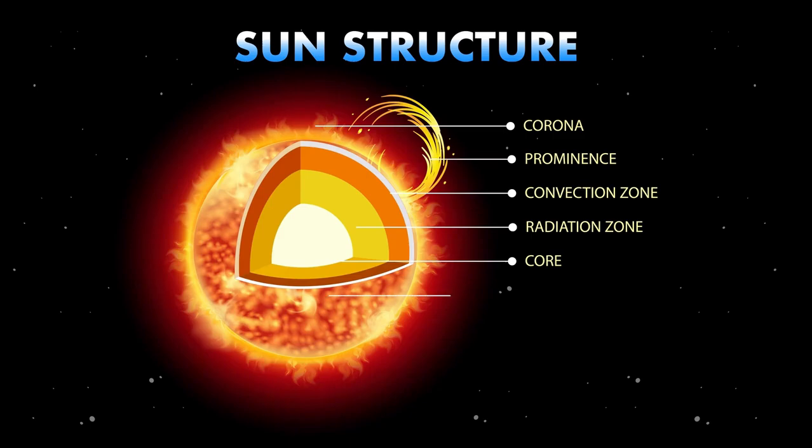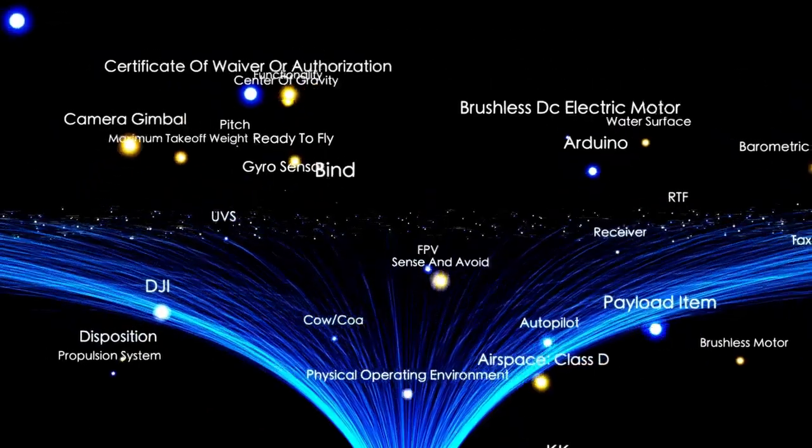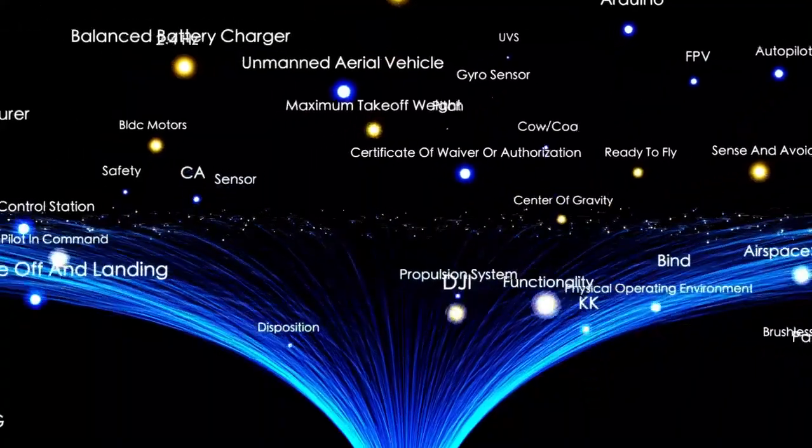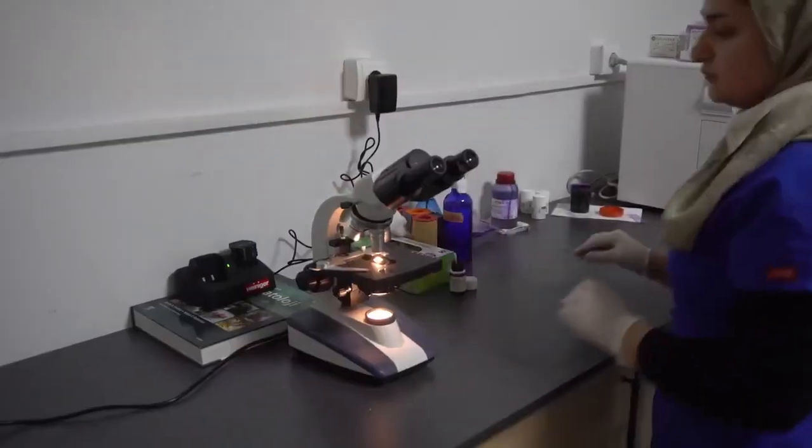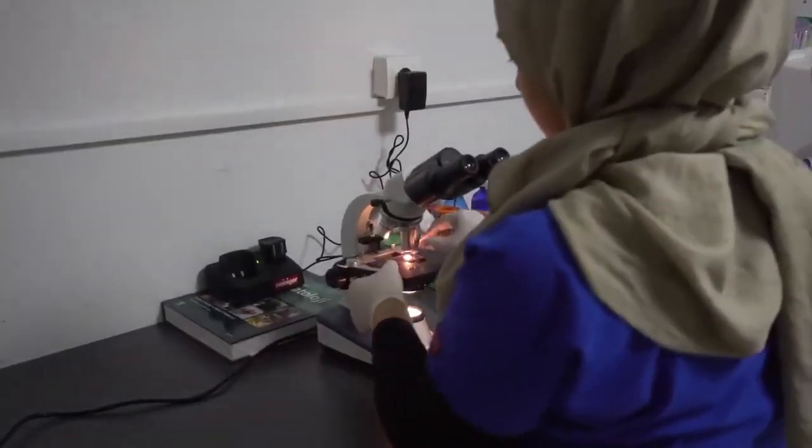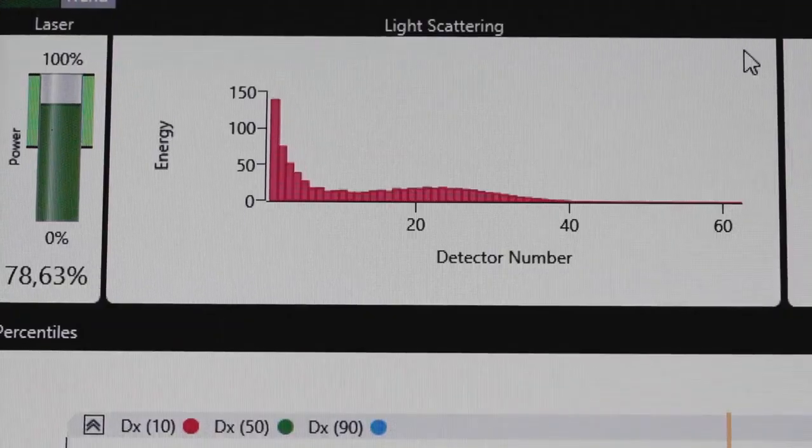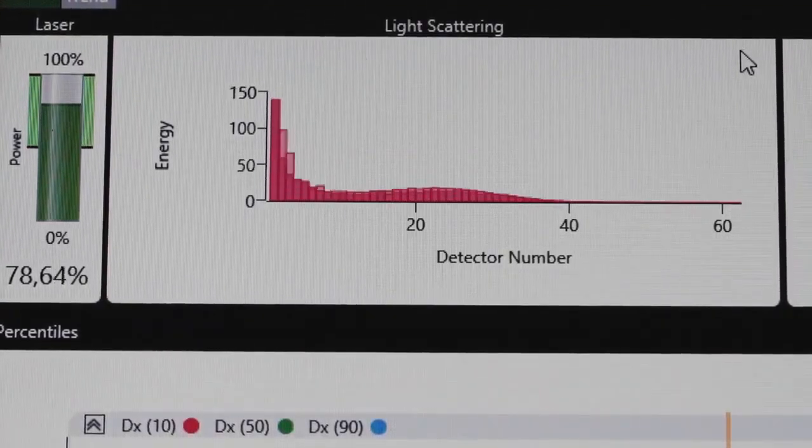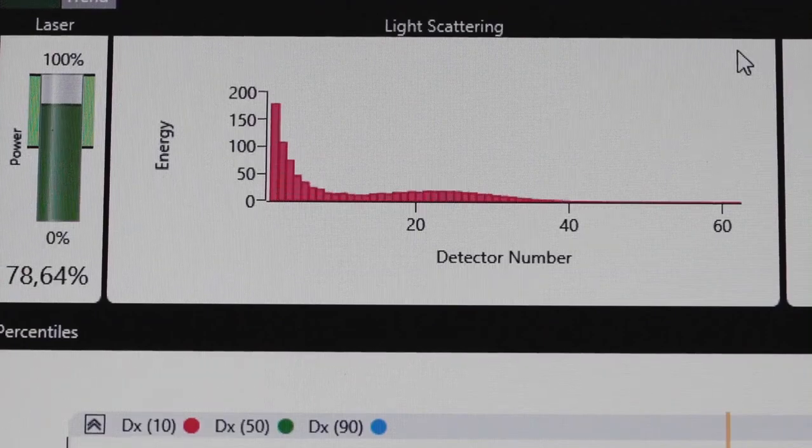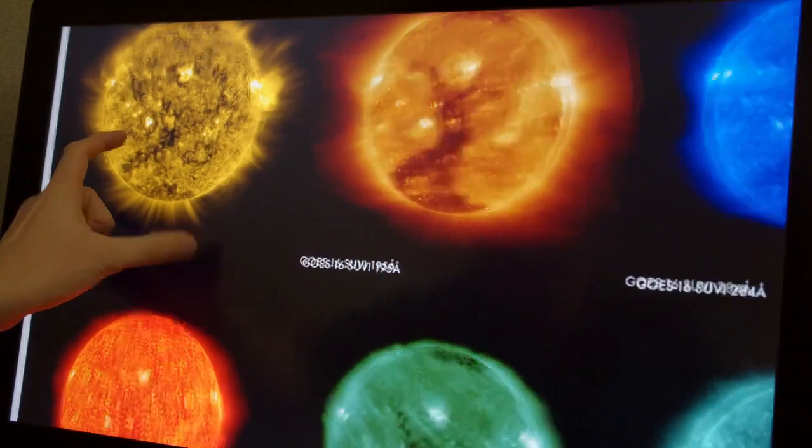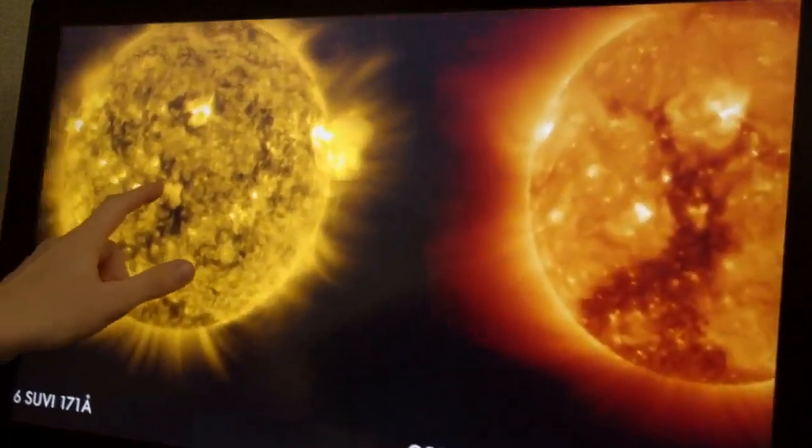To study these phenomena, scientists use advanced tools like photometry and spectroscopy. Photometry measures variations in the star's light over time, offering insights into its pulsations, while spectroscopy analyzes the light at different wavelengths, revealing details about its temperature and motion. Together, these methods create a comprehensive picture of Betelgeuse's behavior, shedding light on the processes driving its changes.